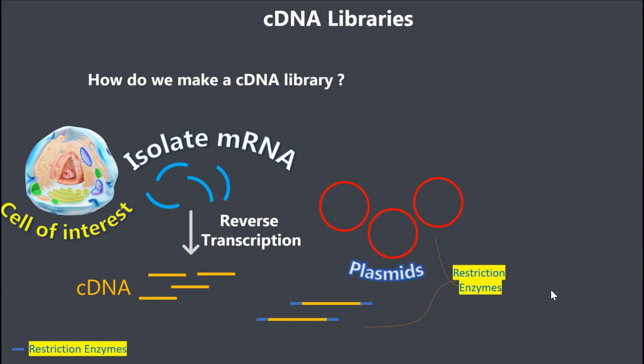Once we have cut our plasmids, we need to ligate them with the cDNA using DNA ligase. DNA ligase combines the cut plasmid and the cut cDNA to make a complete plasmid containing the cDNA insert.